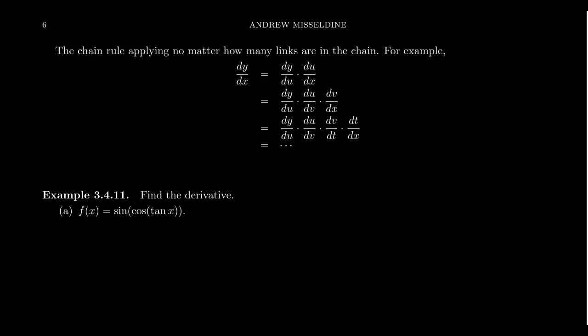It turns out that the chain rule applies no matter how many links are in your chain, and that's actually where the chain rule gets its name. If we're trying to calculate the derivative dy/dx, we can factor the derivative using the chain rule — the derivative respects the function composition. So we can have some outer function y with respect to u and some inner function u with respect to x, and if we take those derivatives separately, their product comes together to form the derivative.